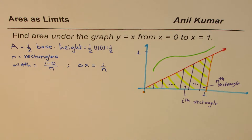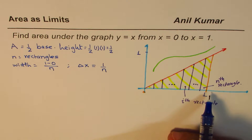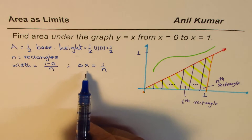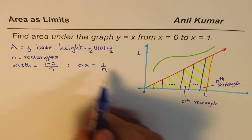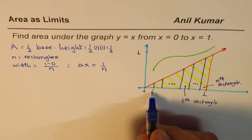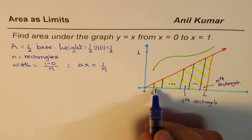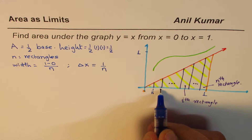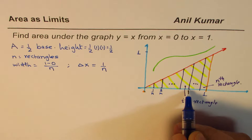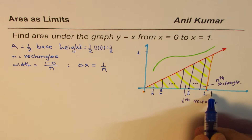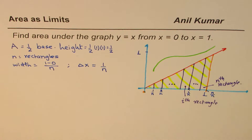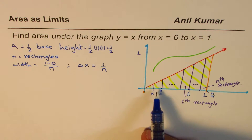As you can see, if I divide all this space into n rectangles, the width of each rectangle is delta x which is 1 over n. So the next point will be 2 over n, the ith point will be i over n, and the nth point will be n over n, which is 1. It works perfectly fine.